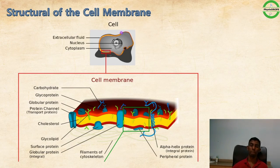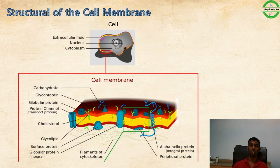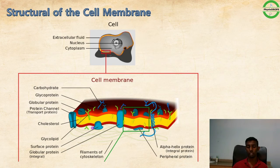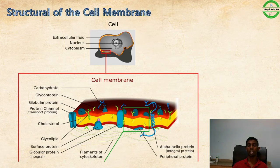The outer fluid surrounding the cell is the extracellular fluid, and inside is the intracellular fluid. If you zoom into the cell membrane, you can see the red layer as the protein layer, the yellow layer as the lipid layer, and again a protein layer at the bottom — this is the three-layered membrane.